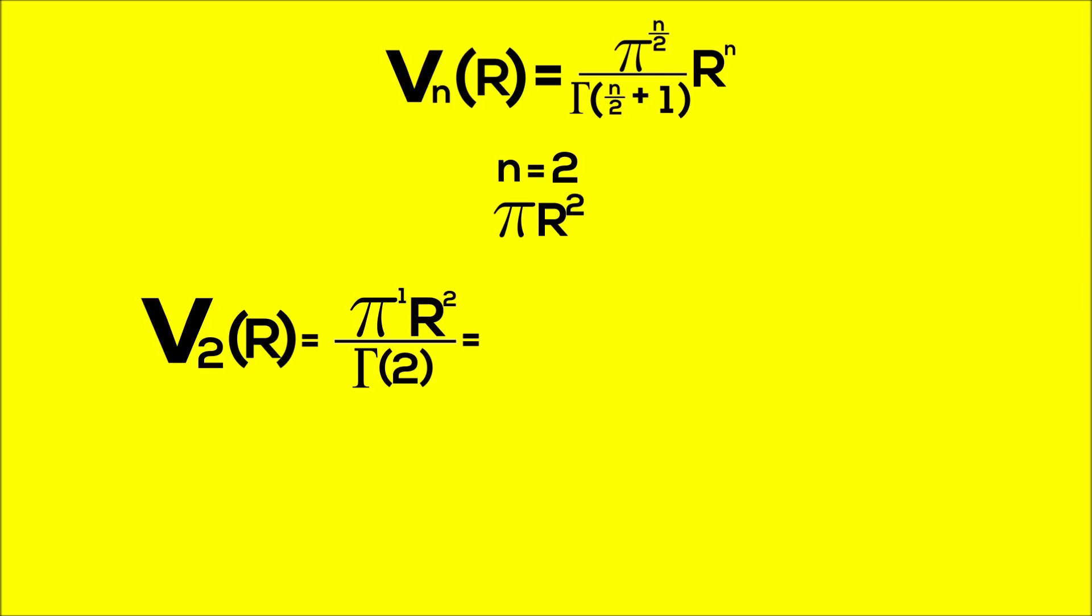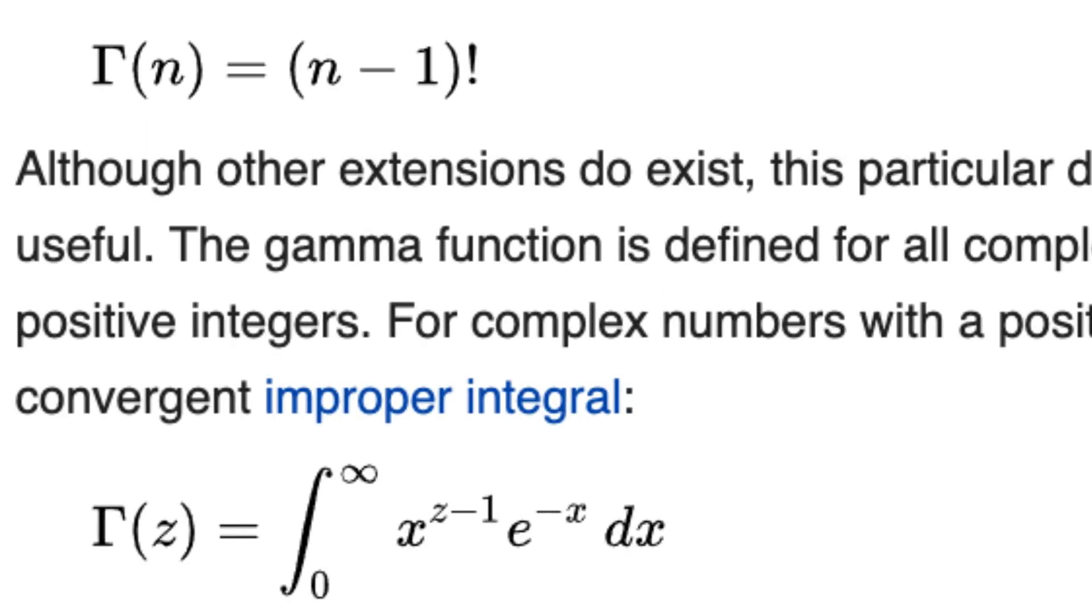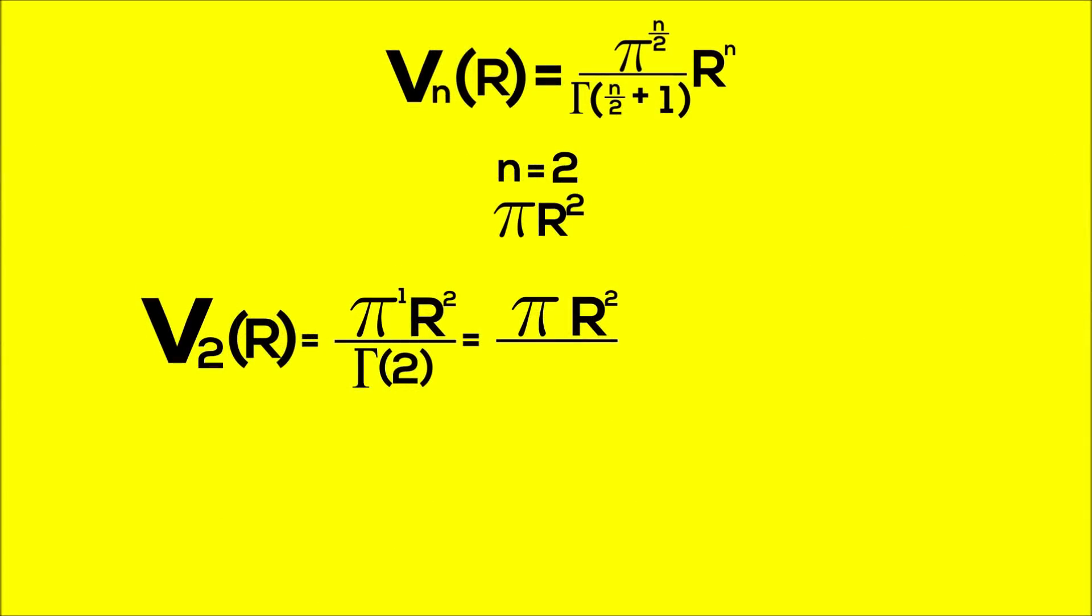Now, I didn't explicitly mention this before, but note that the actual gamma function evaluated at some value refers to that number minus 1 factorial. So when we plug 2 into the gamma function, it comes out to 1 factorial, which is just 1. And thus, we get pi r squared, just as expected.